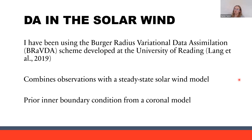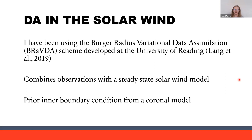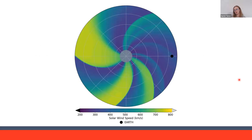I've been using something called the Burger Radius Variational Data Assimilation scheme, or BRAVDA, which has been developed at the University of Reading, mostly by Matt Lang, one of my supervisors. It combines observations from spacecraft with a steady-state solar wind model. In the current forecasting scheme, we take the photospheric observations and essentially from there the models are free-running — they're not constrained by observations. BRAVDA takes information from observations and combines it with the prior inner boundary condition from a coronal model to produce an optimum estimation of the solar wind.